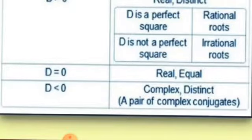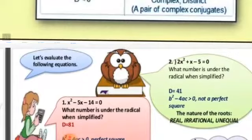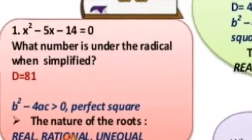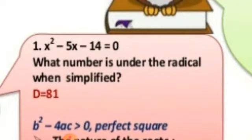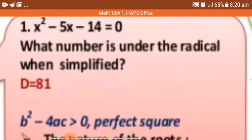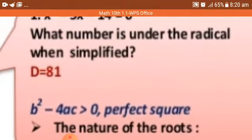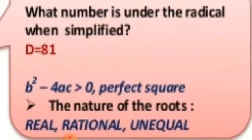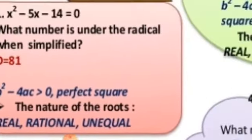Let's solve and check. For the equation x² minus 5x minus 14 equals zero, we find the discriminant: b² minus 4ac gives us 81. That is greater than zero — first case. Is 81 a perfect square? Yes, 81 equals 9² — it is a perfect square. So the nature of the roots is real, rational, and unequal.